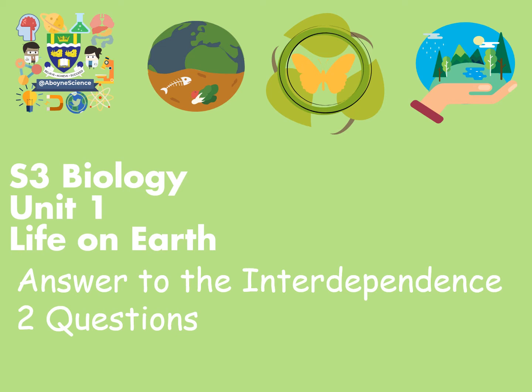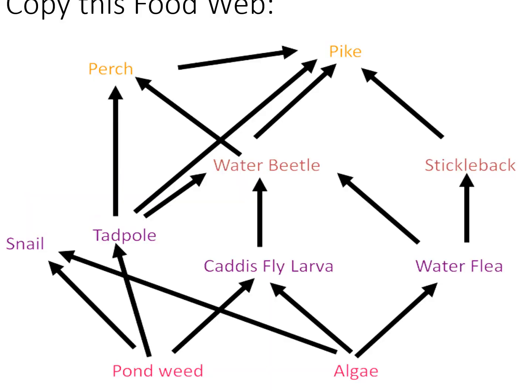Hi guys, Mr. Kinnear here. I just thought I'd give you some audio feedback on the questions from Interdependence 2, regarding the food web. Question one was: what would happen to water fleas if there was no algae — if algae went extinct? As we discussed in the previous video, water flea numbers would decrease because there would be no food for them.